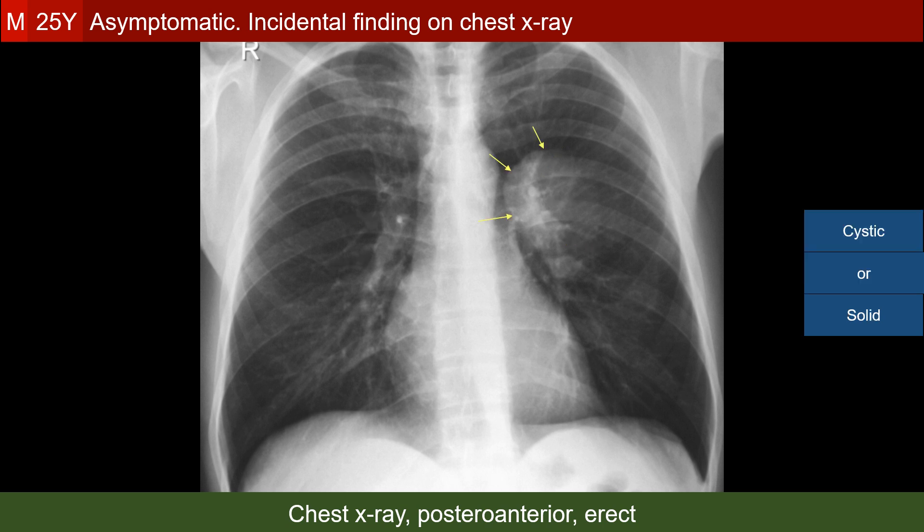Is this lesion cystic or solid? The answer is solid, because cystic lesions will have their lower edge well-defined and their upper edge fading, due to the effect of gravity on the fluid in the cyst in this erect radiograph — the opposite of what we see in this case.